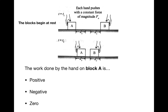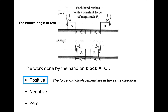In experiment two, the blocks begin at rest, each hand pushes with a constant force of magnitude F naught, and the blocks both move the same magnitude of displacement D naught. Block A moves to the right and block B moves to the left. The work done by the hand on block A is positive because the hand pushes to the right and the block also moves to the right.